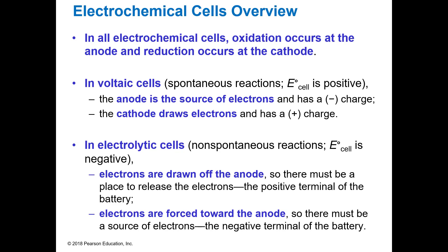In all electrochemical cells oxidation occurs at the anode and reduction occurs at the cathode. The voltaic cells, which is what we've been looking at so far, have been where your anode is the source of your electrons and your cathode draws the electrons, it accepts those. In electrolytic cells though, non-spontaneous, the E⁰ of your cell is going to be negative in electrolytic cells because electrons are being forced from the cathode to the anode by the addition of electricity. And so when you come back we're going to talk about electrolytic cells.